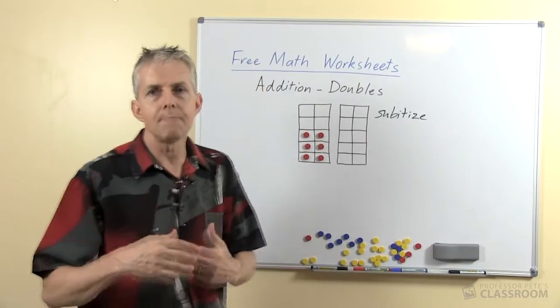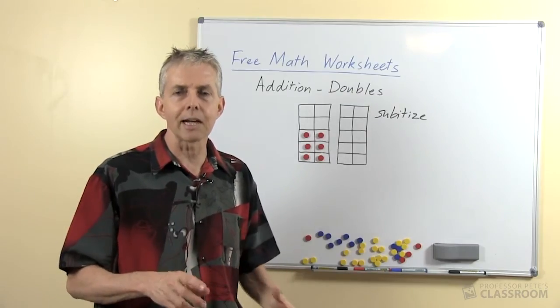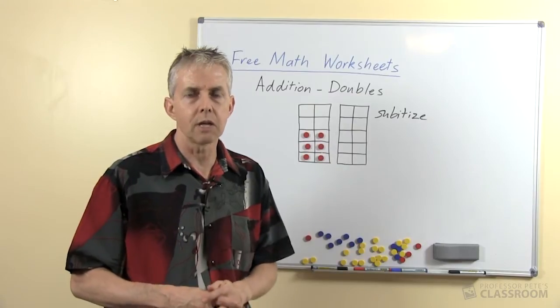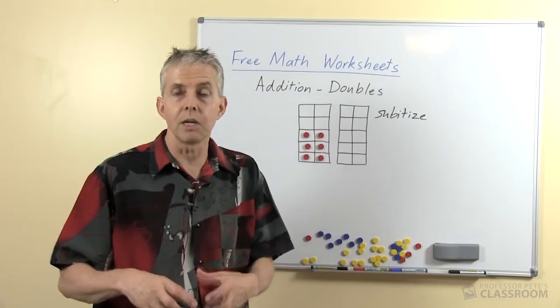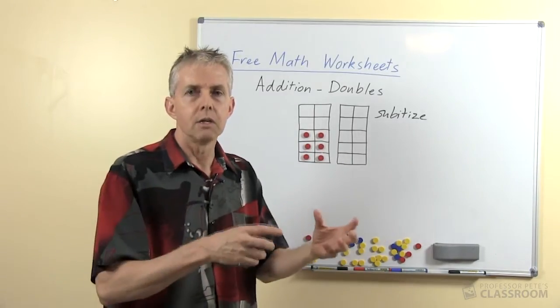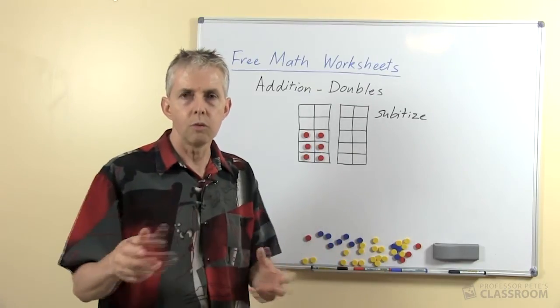And that leads to the observation that these doubles number facts there isn't actually a thinking strategy that we're asking the students to carry out, rather they're a set of number facts that we want them to become familiar with and to be able to associate the single with the double, so 3 with 6 and 4 with 8 and so on.